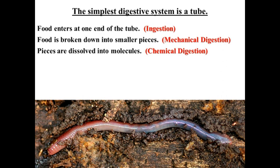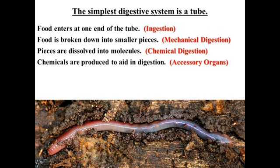The next step is that those pieces become dissolved into individual molecules, and we call that chemical digestion. So we have two different forms of digestion: one is mechanical, the other is chemical. Then we have various accessory organs. In these accessory organs, they produce chemicals which we call enzymes, but there are other chemicals as well — things like hydrochloric acid and various hormones — that are produced to aid in the digestive process.